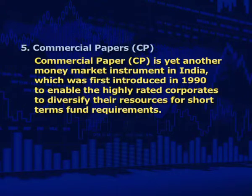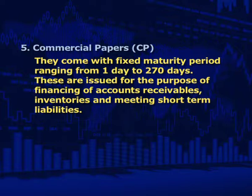The returns on certificate of deposits are higher than T-bills because they carry a higher level of risk. Fifth is commercial papers (CP). Commercial paper is a money market instrument first introduced in 1990 to enable highly rated corporates to diversify their resources for short-term fund requirements. It is a short-term unsecured promissory note issued by corporates and financial institutions at a discounted value on face value, with a fixed maturity period ranging from one day to 270 days. These are issued for financing accounts receivables, inventories, and meeting short-term liabilities. The return on commercial papers is higher compared to T-bills, as the risk is also higher since they are less secure.